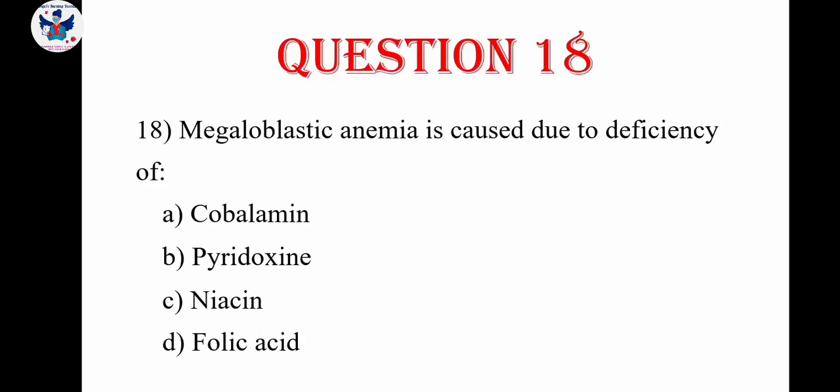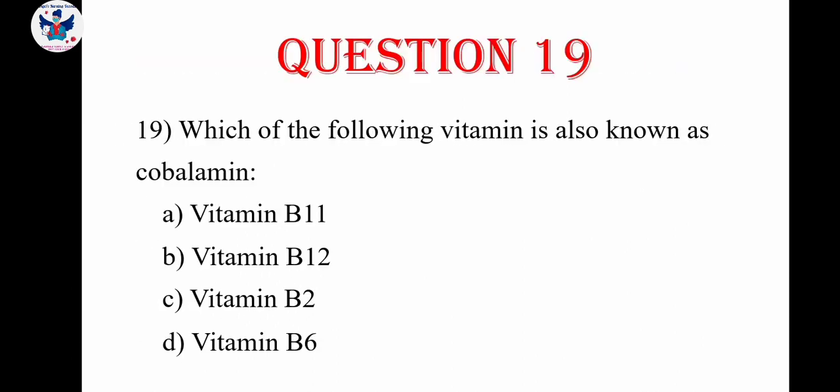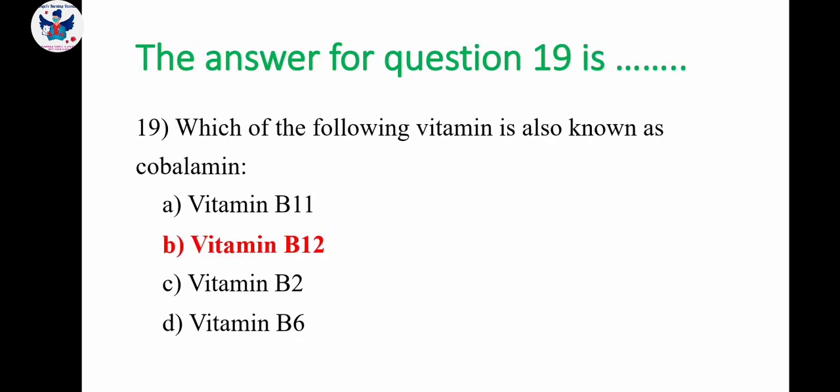Next: megaloblastic anemia is caused due to deficiency of — cobalamin, pyridoxin, niacin, or folic acid. The correct answer is cobalamin. Question number 19: which of the following vitamin is also known as cobalamin — vitamin B11, vitamin B12, vitamin B2, or vitamin B6? The correct answer is vitamin B12.